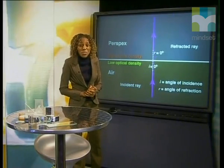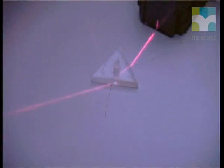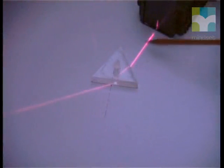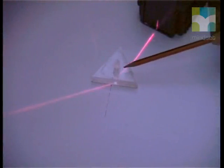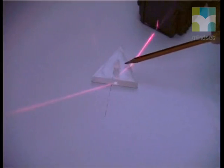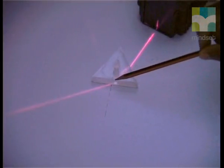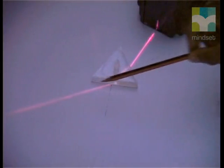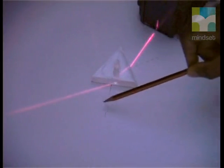Let's see if this will happen with a triangular prism. I have a triangular glass prism and a ray box ready. After I dim the lights, I'm going to let a ray hit one side of the triangular glass prism. You can see that the light does exactly what is expected: when it moves from air into the glass, it is refracted towards the normal, and when it leaves the glass back into the air, it is refracted away from the normal.